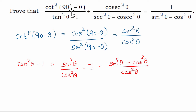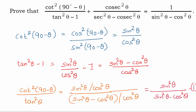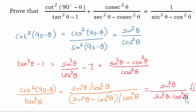So we have simplified the numerator and the denominator. Putting them together: sin square theta divided by cos square theta in the numerator, and sin square theta minus cos square theta divided by cos square theta in the denominator. The cos square theta cancels, and the first term simplifies to sin square theta divided by sin square theta minus cos square theta.